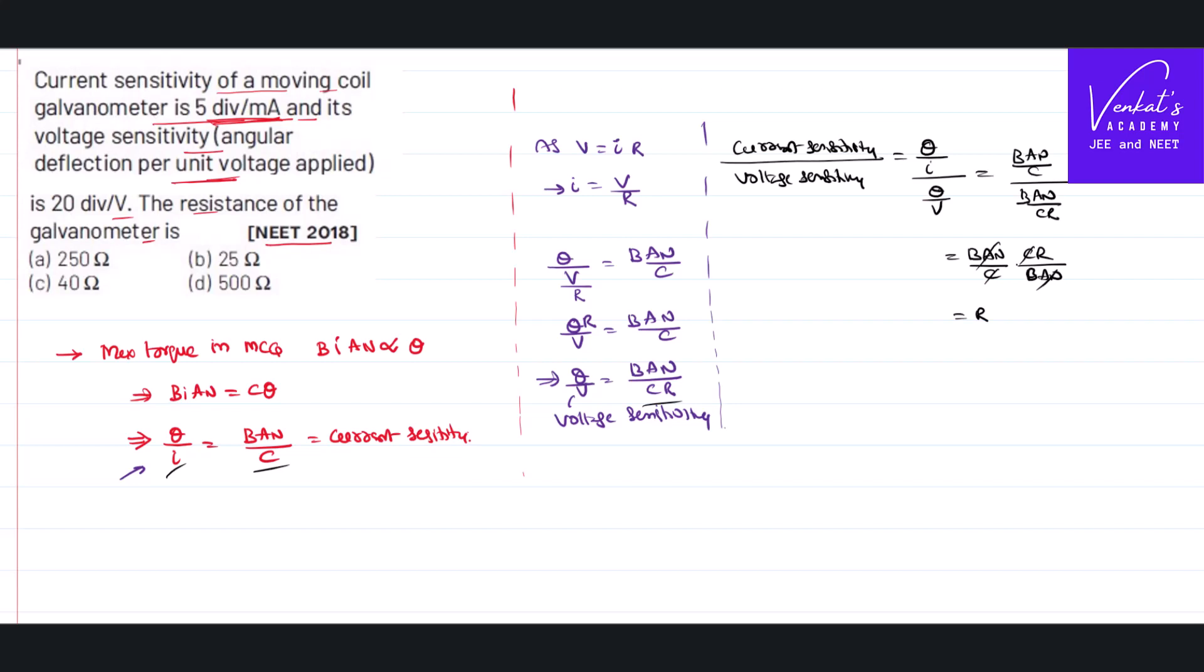Current sensitivity is given as 5 divisions per milliampere. To convert that milliampere into normal units, I have 10^-3. Voltage sensitivity is 20 divisions per volt. That implies R equals 5 by 10^-3 times 1 by 20. That is 1 by 4 times 1000, which equals 250 ohms. That's how we get the answer.